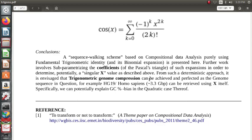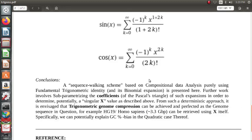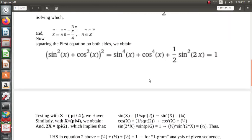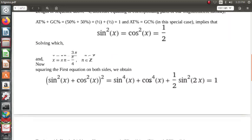For example, HG-19 HOMO SAPIENS 3.3 Gbp can be retrieved using x itself. So specifically, we can explain GC percentage bias in the quadratic case, because if you see the quadratic case, it's going to be sin⁴(x) + cos⁴(x) + (1/2)sin²(2x) = 1.